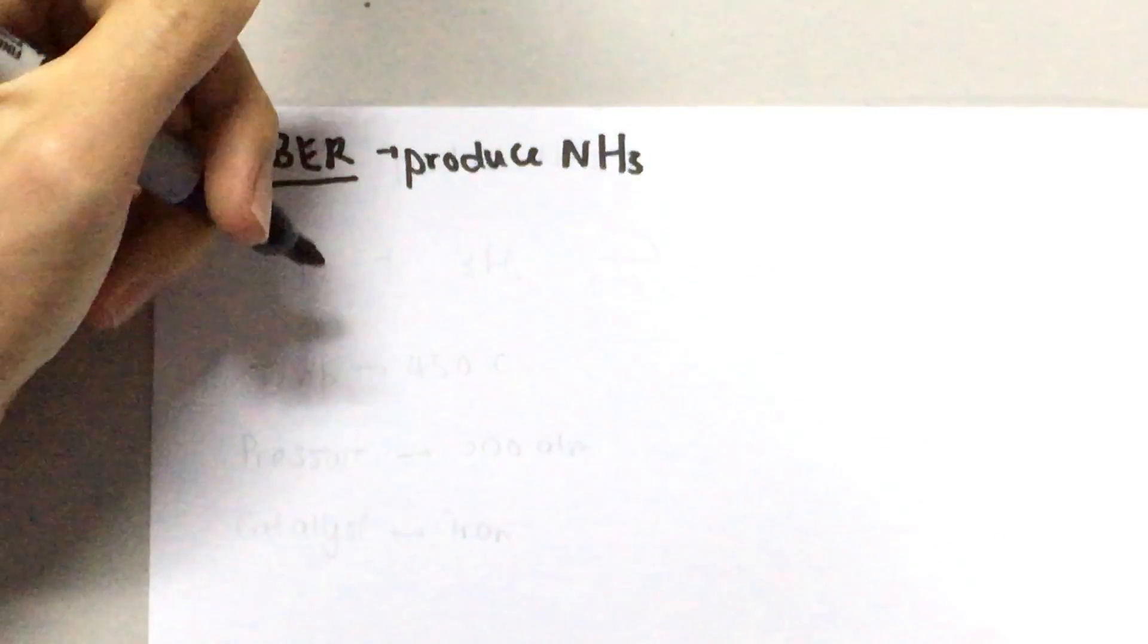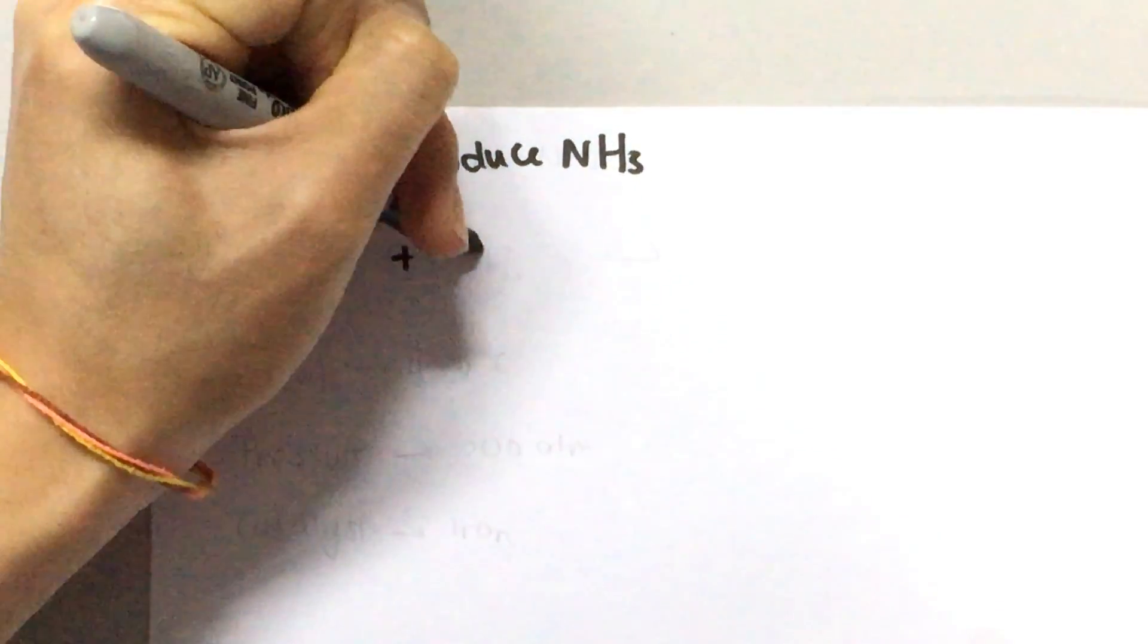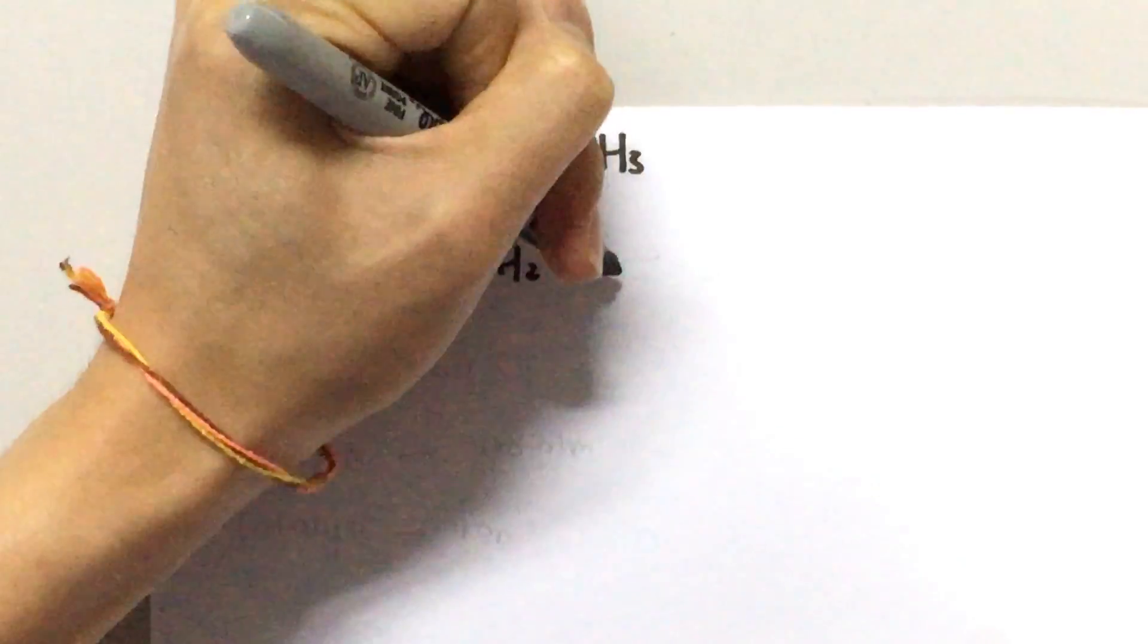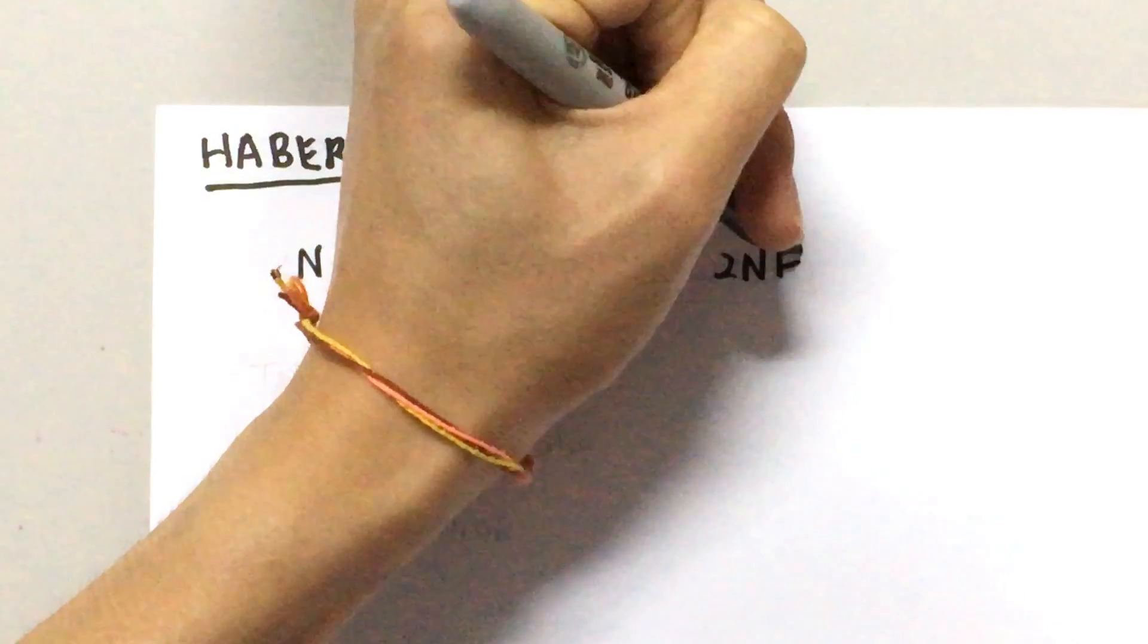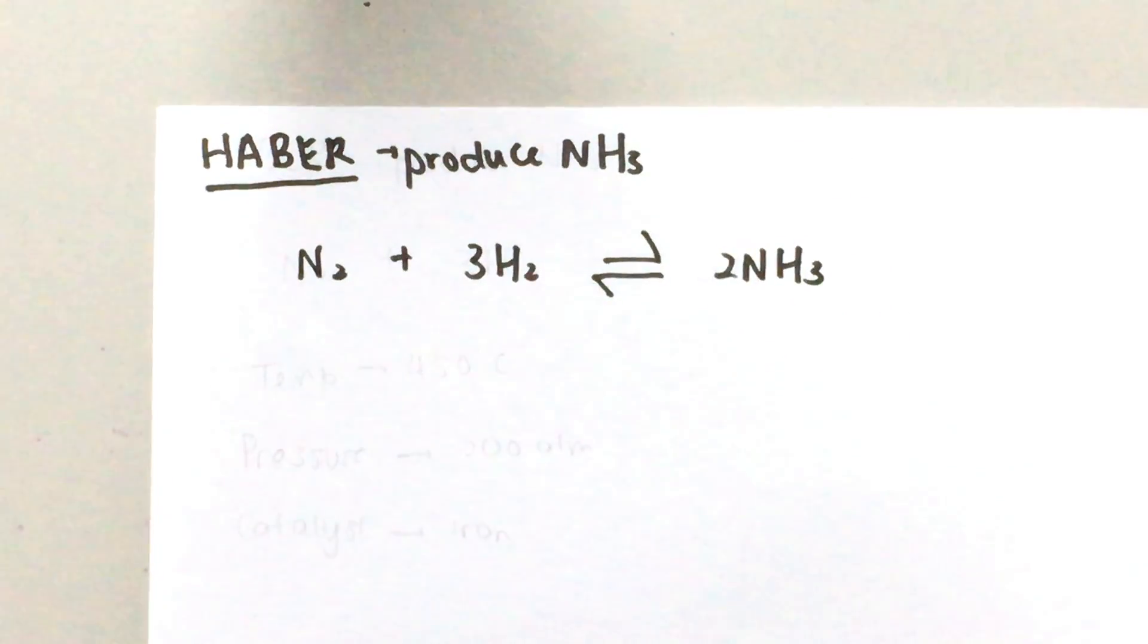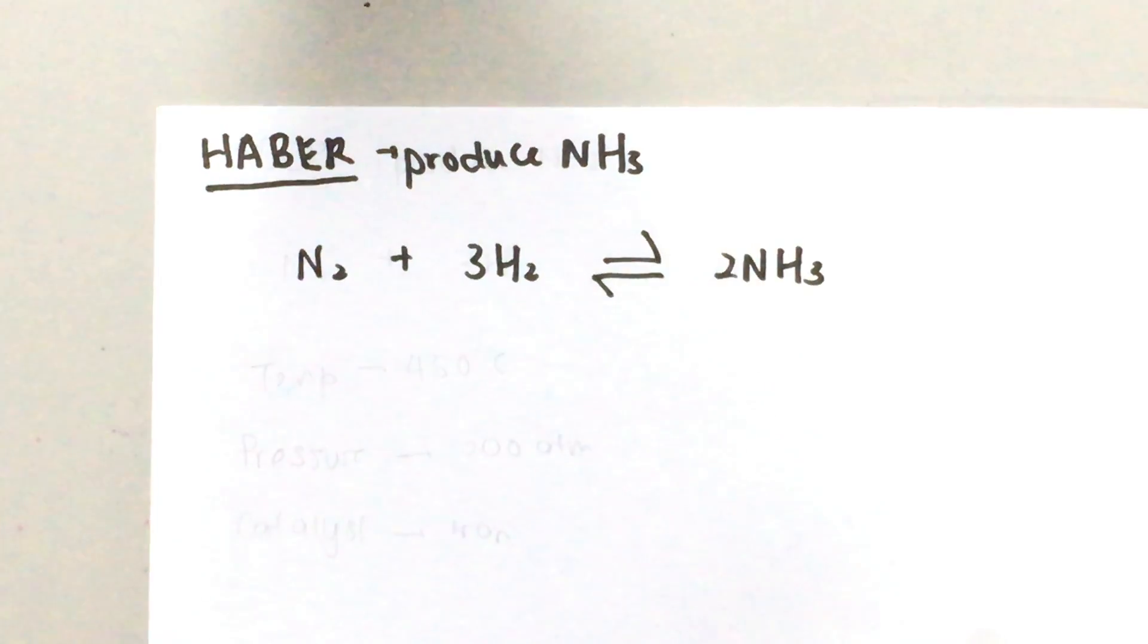First we have nitrogen gas and hydrogen gas. When we react them together we're gonna get ammonia gas. This is a one-step process and you will notice that it's a reversible reaction so therefore it will reach an equilibrium.